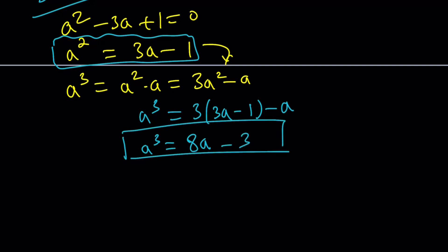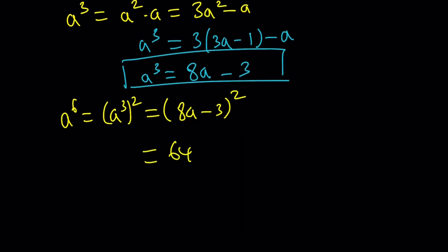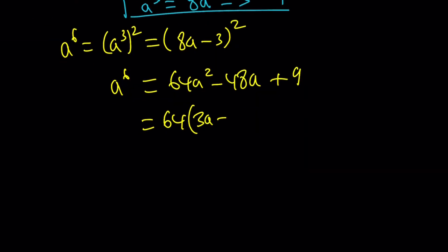So that's a cubed, but I want to get to a to the 6. So why don't we just square this? A to the 6 is a cubed squared. We're doing something similar with polynomials. So now when you square this thing, it's going to become 64a squared minus 48a plus 9. And again, like before, we're going to replace a squared with 3a minus 1. That's why we can always get a linear result. So we're kind of linearizing everything. And then this is going to be 192 minus 48. That's going to be 144a minus 64 plus 9. That's going to be minus 55.